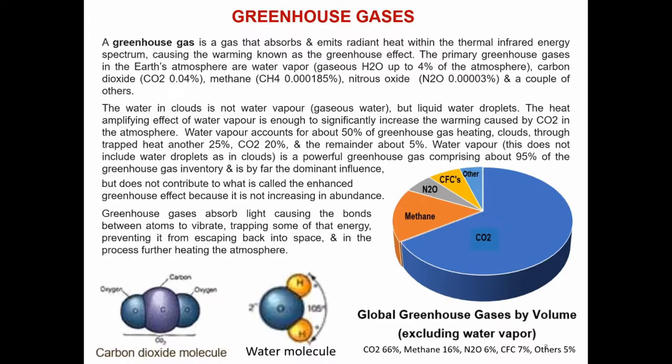The sun heats the earth and oceans, which in turn heat the atmosphere and circulate that heat largely by convection. A greenhouse gas is a gas that absorbs and emits radiant heat within the thermal infrared energy spectrum, causing the warming known as the greenhouse effect.